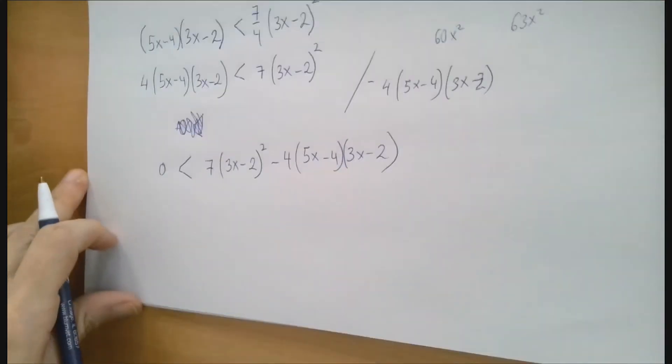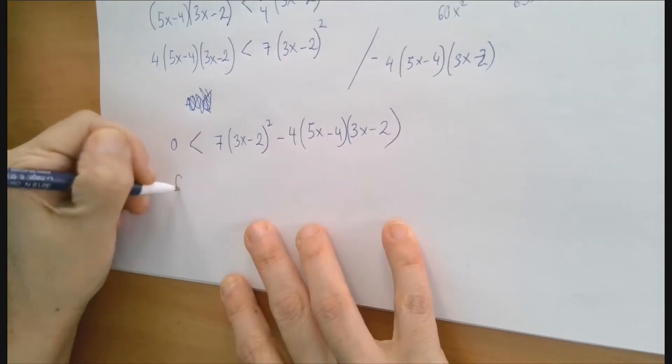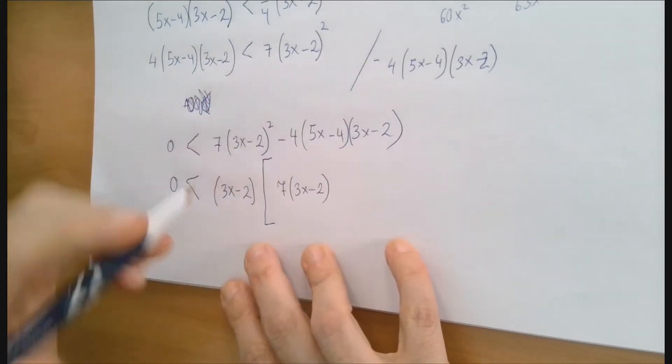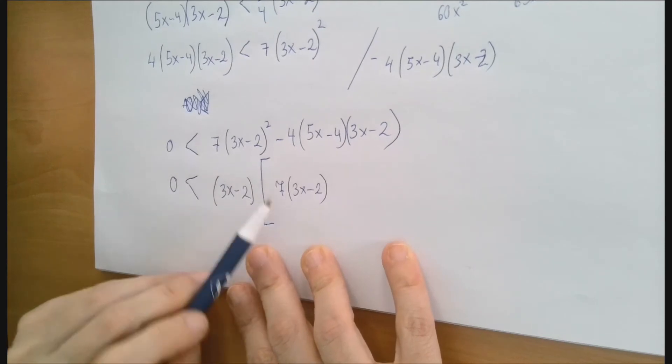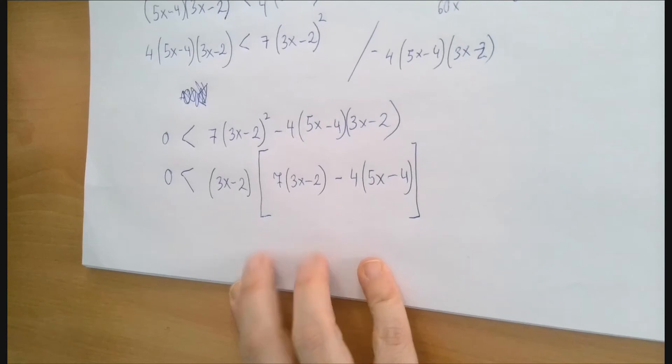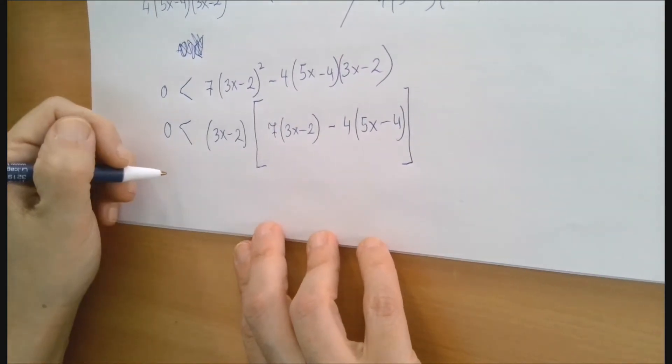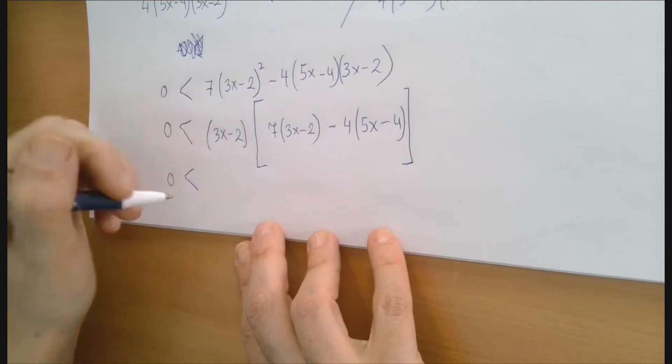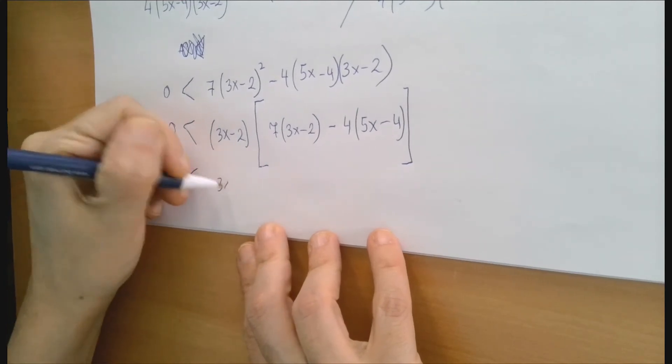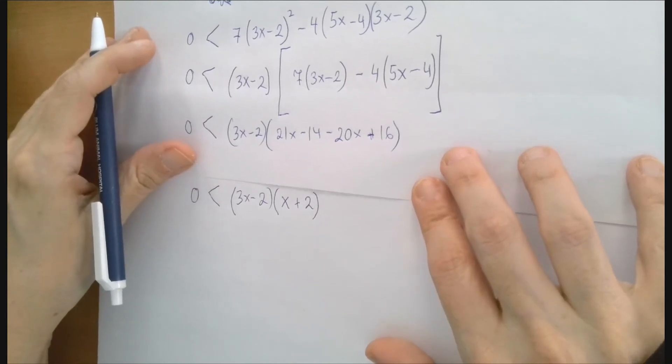Now that one side is 0, we need to factor the other side. We have a binomial common factor, 3x minus 2, so let's factor that out. Then what's left is 7 times the second factor, 3x minus 2, minus 4 times 5x minus 4. So now if you notice that the second longer factor is just linear, we just need to clean up, combine like terms. And then we have the factored form.